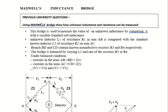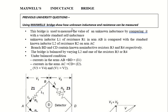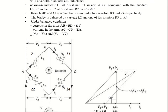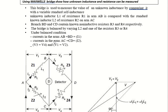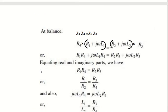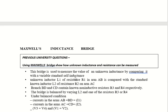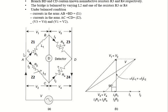This is a previous university question: using the Maxwell bridge, show how unknown inductance and resistance can be measured. In this bridge circuit, Z1 is replaced by R1 and L1, Z2 is R2 and L2, Z3 is R3, and Z4 is R4. The unknown inductance L1 and resistance R1 in arm AB are compared with the standard inductance L2.